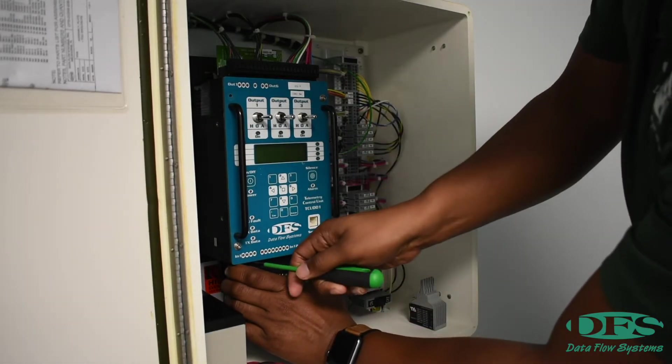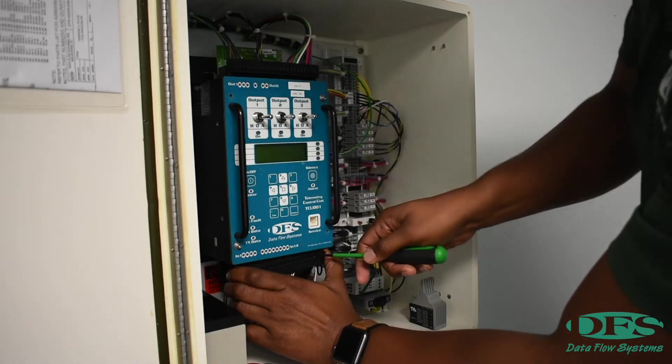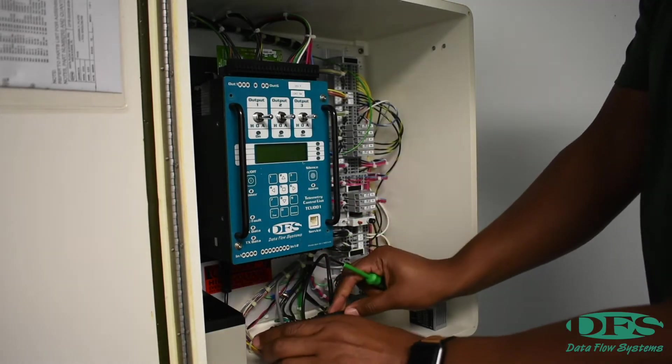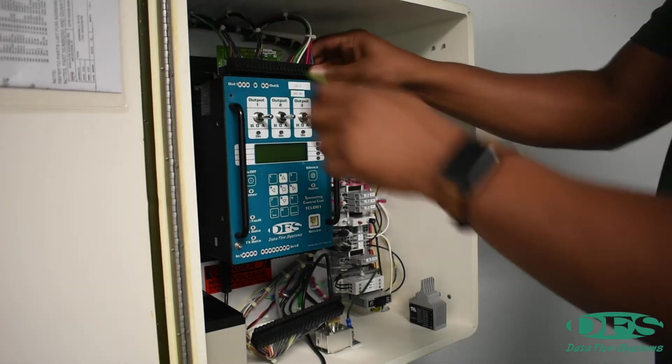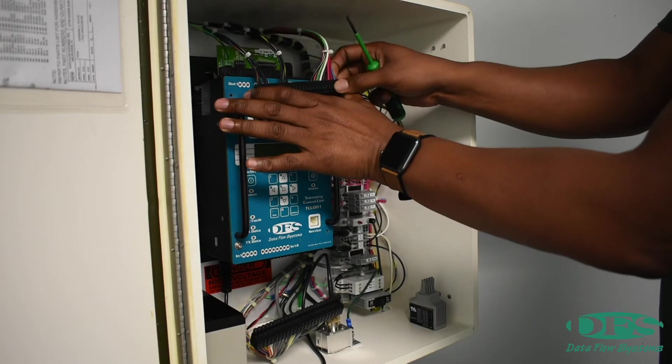Disconnect the P connectors. Use the insulated flathead screwdriver to gently pry the P-1 and P-2 connectors free. Do not pull on the P connector wires to remove them.